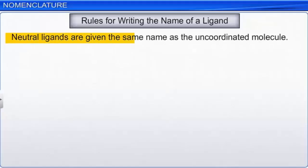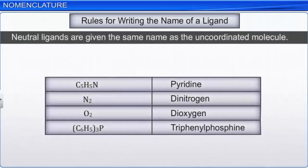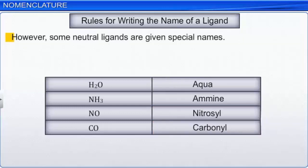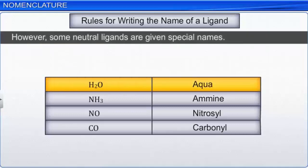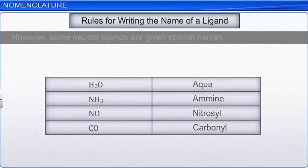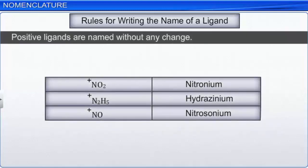Neutral ligands are given the same name as the uncoordinated molecule, for example, pyridine, dinitrogen, dioxygen, and triphenylphosphine. However, some neutral ligands are given special names: aqua for water, amine for ammonia, nitrosyl for nitric oxide, and carbonyl for carbon monoxide. Positive ligands such as nitronium, hydroxonium, and nitrosonium are named as such without any change.